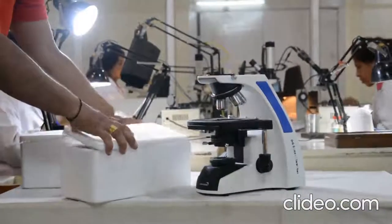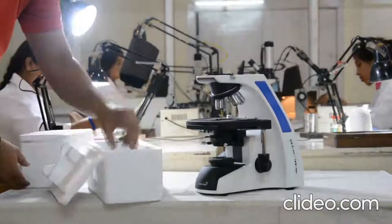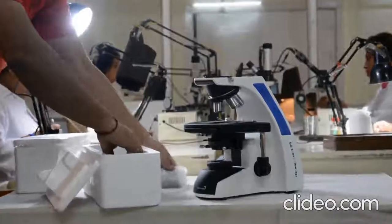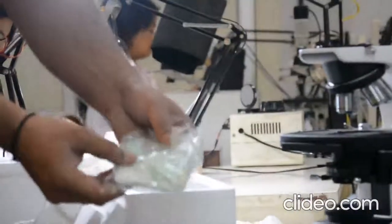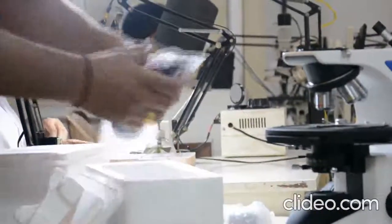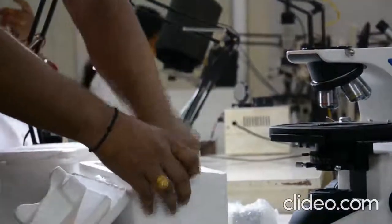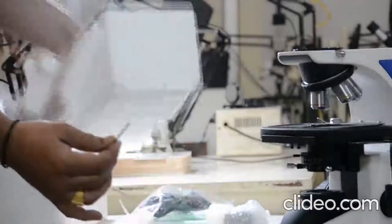These are the other attachments which come along with the microscope. These are the eyepieces. This is the dust cover. And this is the power cord. And this is the Allen key which will be used later.